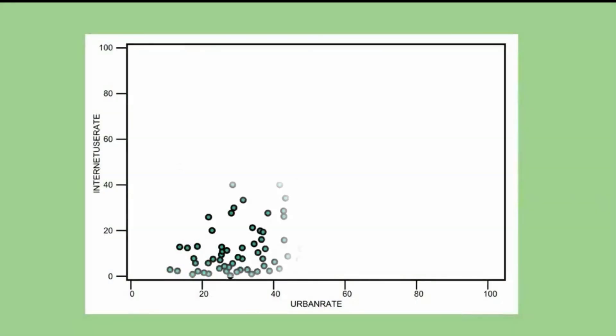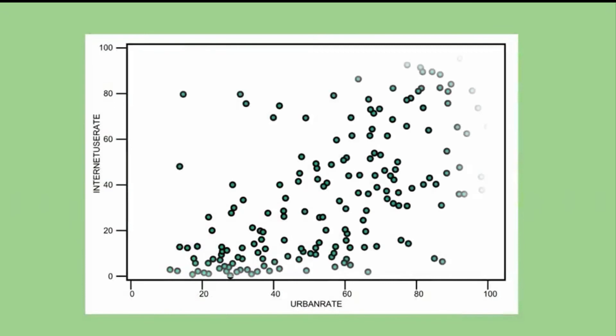However, note that this is only the expected internet use rate given what we know about urbanization. It's the value that rests exactly on the best fit line. Unless our data were perfectly correlated, we would anticipate that our expected value and our observed values would differ from one another to some extent.